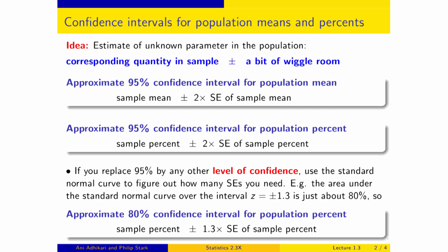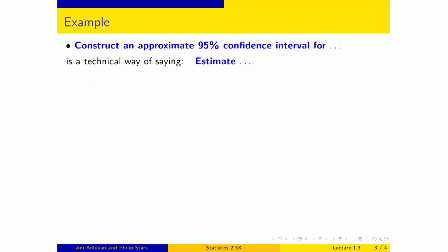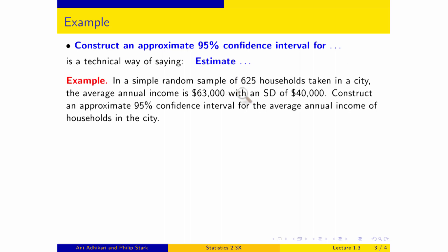So what exactly does confidence mean? Let's try to make this a little more precise. First I'm going to do an example of a calculation, and then we are going to do a justification for what exactly is going on here. This is jargon: 'construct an approximate 95% confidence interval' sounds very impressive, but all it means is estimate in a sensible manner. So here we go: I've got a simple random sample of 625 households in a city. The average income is $63,000 in that sample, and the SD is $40,000. Construct an approximate 95% confidence interval — which is a long way of saying estimate — the average annual income of households in the city.